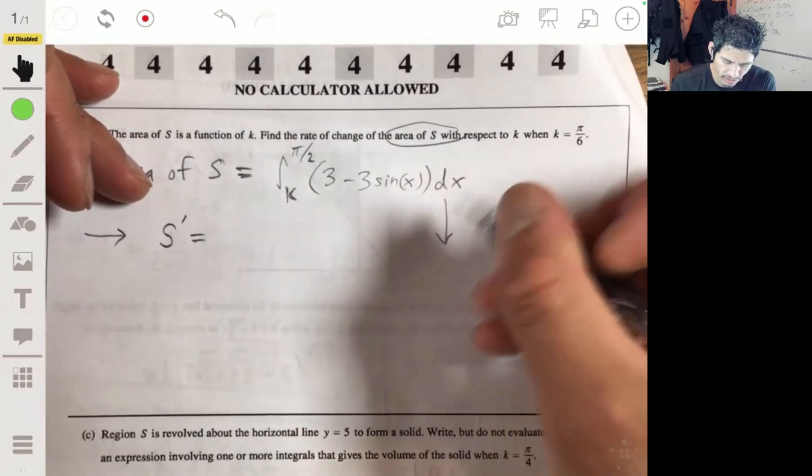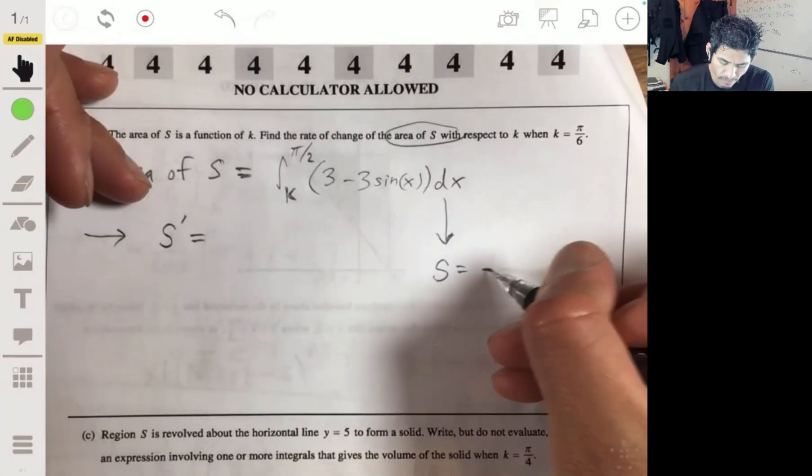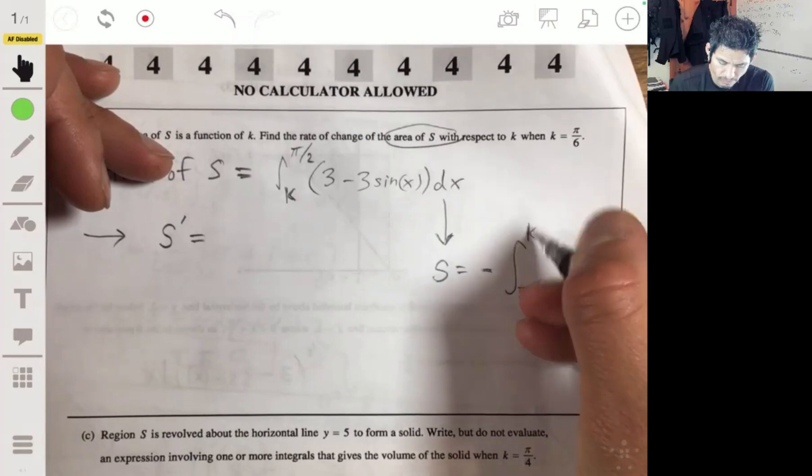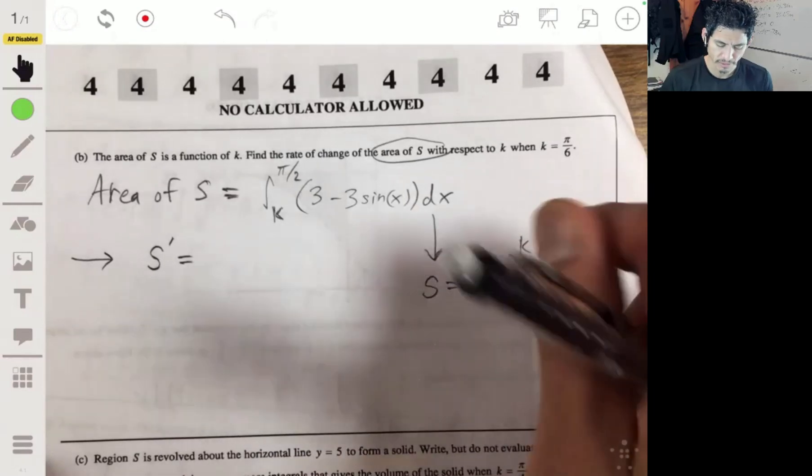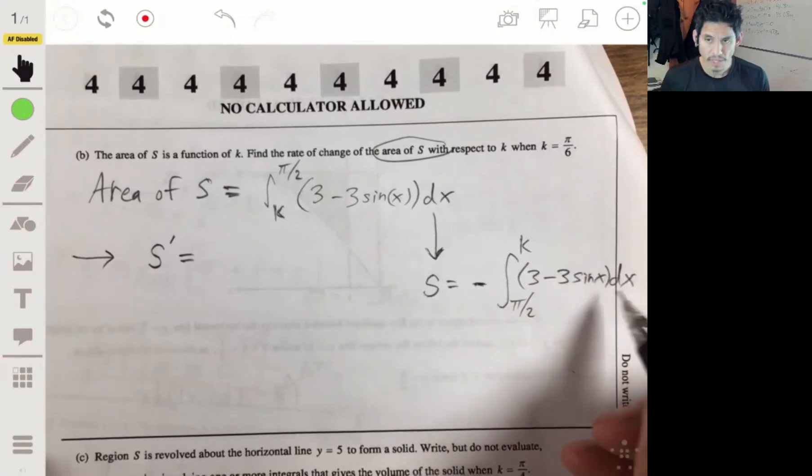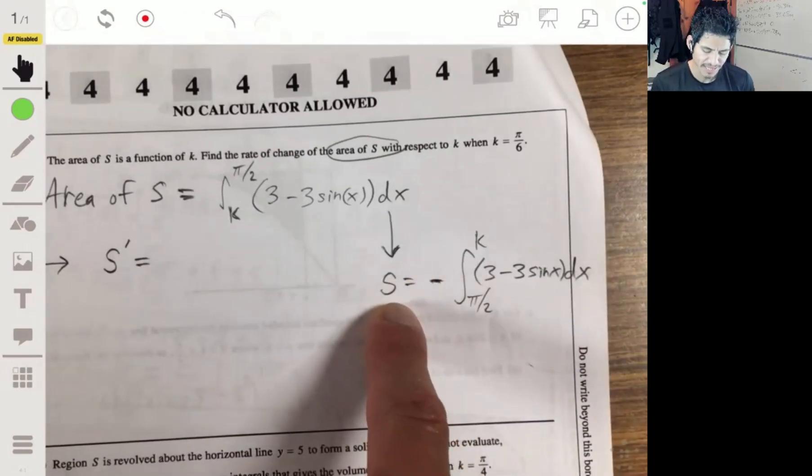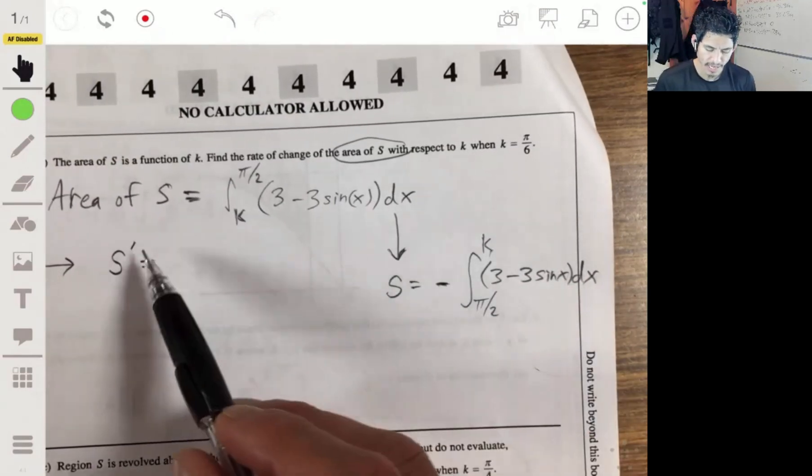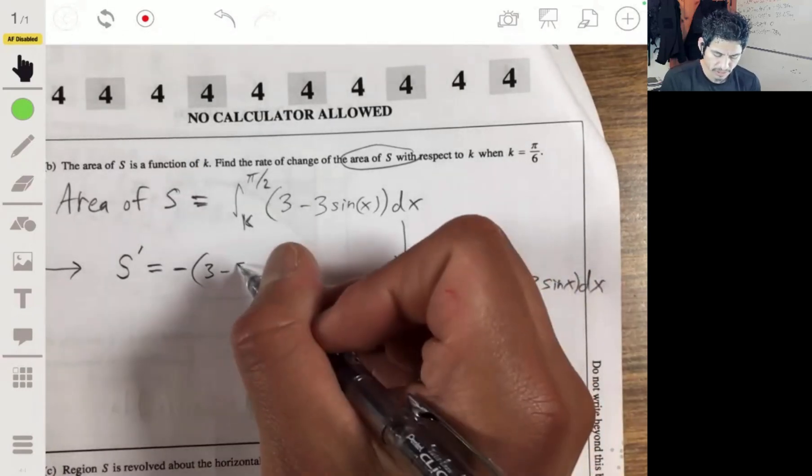You can rewrite this as S being equal to negative 1 times integral from pi over 2 to k. Remember the property of integrals? We just flip the endpoints, and the integrand stays the same. But, big but, an important but. Now, when you take the derivative of S, you can just use the second fundamental theorem of calculus, meaning that you can just plug this endpoint into here, and S prime just becomes negative 1 times 3 minus 3 times the sine of k.